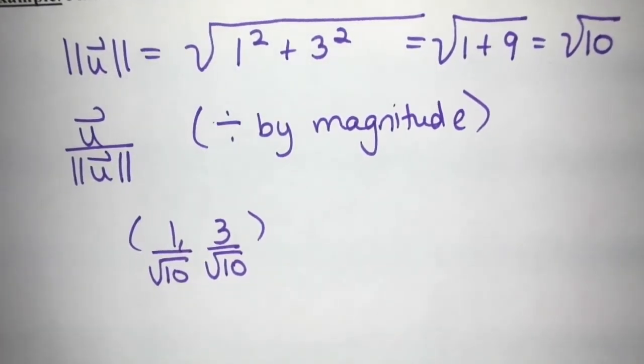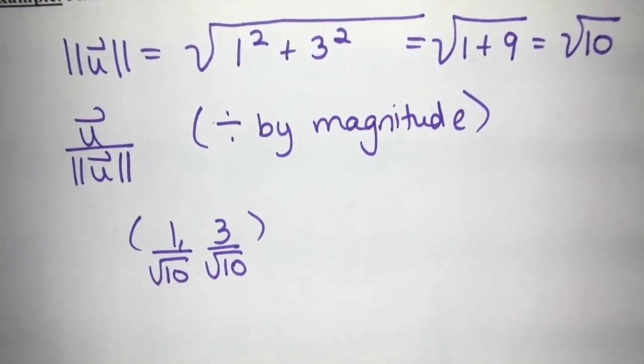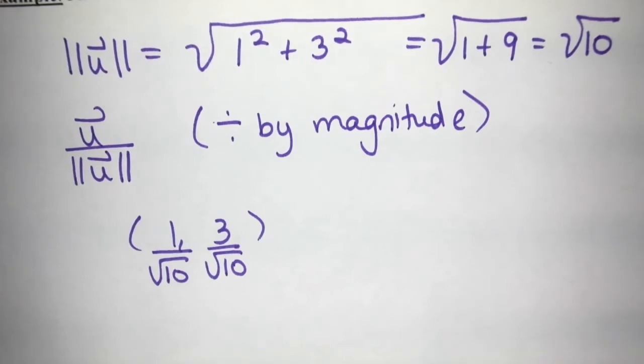And if we were to check, we could do the magnitude of this, square each of them, add them up under a square root. And of course, we would get one because the unit vector has magnitude of one.